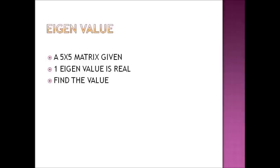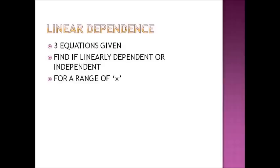Another question was based on eigenvalues. A 5×5 matrix was given and it was stated that one of the eigenvalues is real. A 5×5 matrix will have 5 eigenvalues, so if one is real, the other 4 are imaginary numbers existing in conjugate pairs. We had to find the value of this real eigenvalue using trace and other properties.